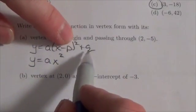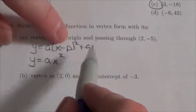At the origin means p and q are both going to be 0.